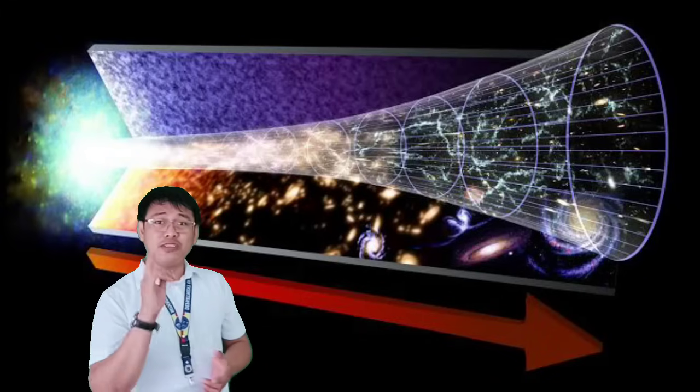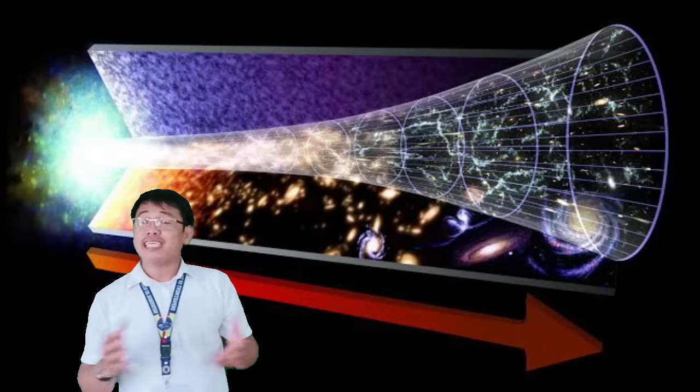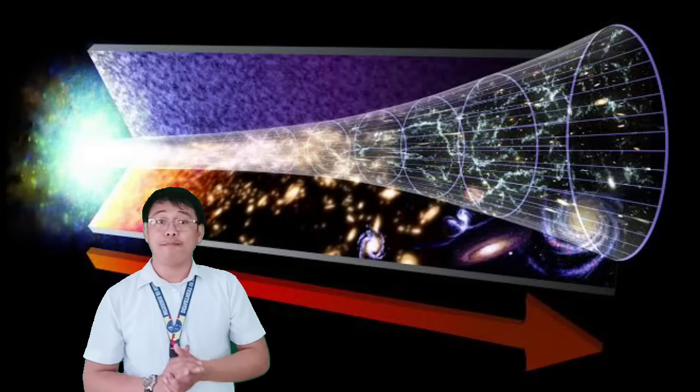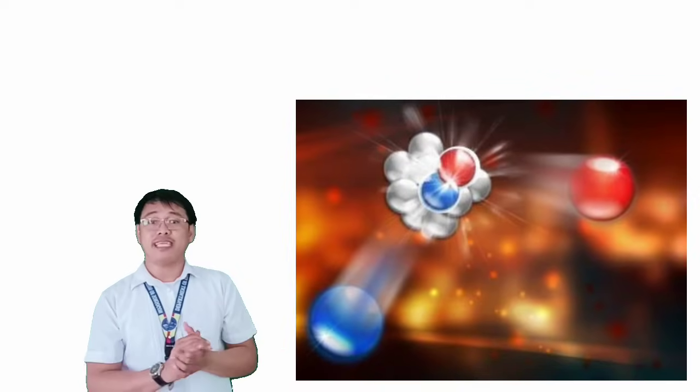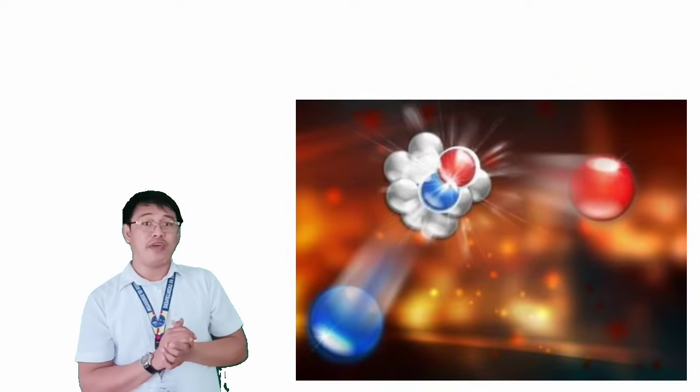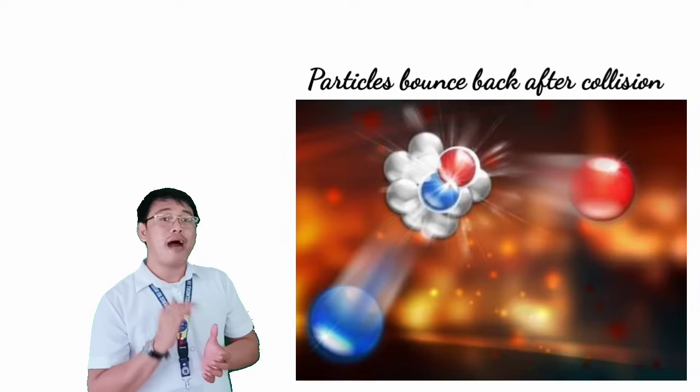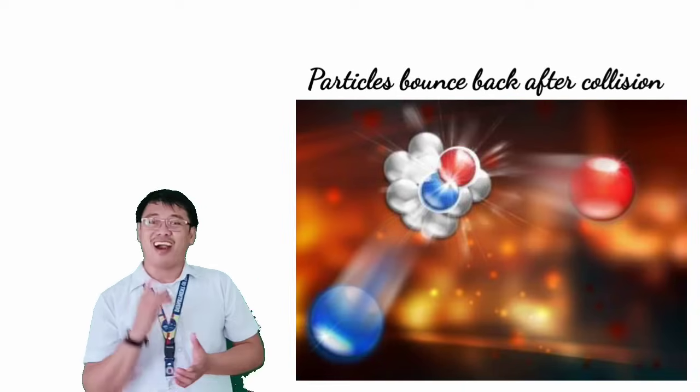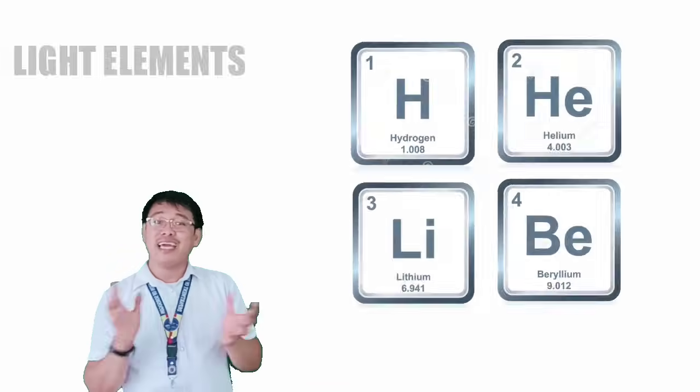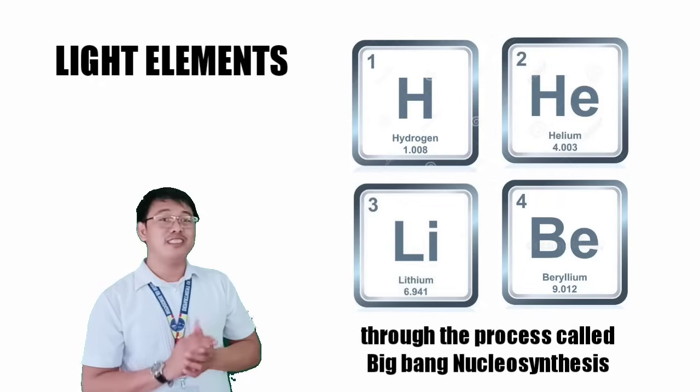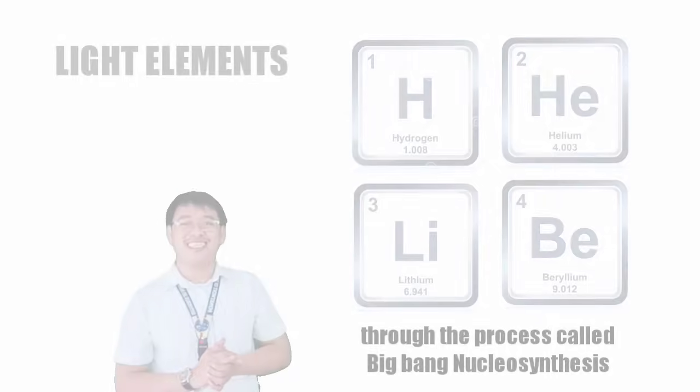Now, since the universe continues to expand, minutes after the explosion, the temperature continuously drops, making the particles unable to combine due to the insufficient amount of energy. Particles bounce back during collision and no more elements are formed. So that is how light elements are formed in the early universe, through the process called Big Bang Nucleosynthesis.